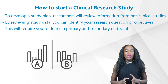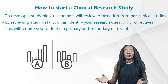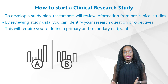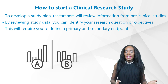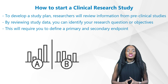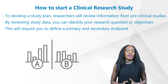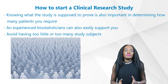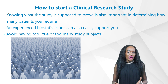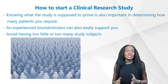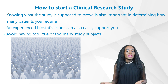To develop a study plan, researchers will review prior information about the product from pre-clinical studies in order to start the first-in-human trials. By reviewing previous study data, you can identify your research question or objectives, such as: treatment A is better than treatment B. This will require you to define a primary and secondary endpoint based on a reasonable estimate of what effects you expect to measure. An experienced biostatistician can also support you with this step, as you want to avoid having too little or too many study subjects.